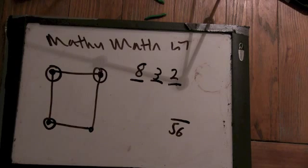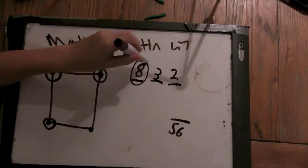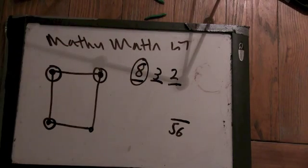Help me understand the calculation that you're doing right now. So I'm saying you have a cube, and then you pick a vertex to go to a face of the cube.